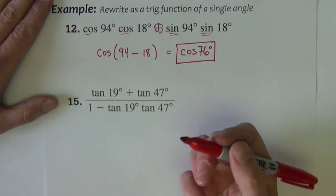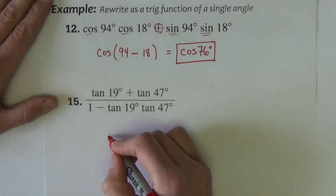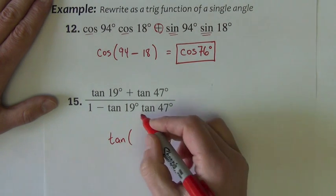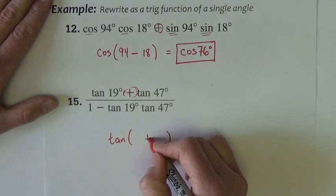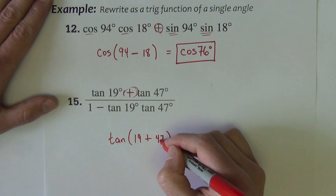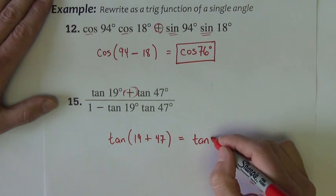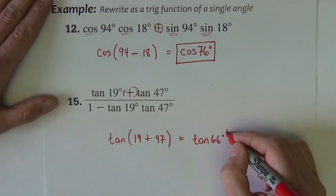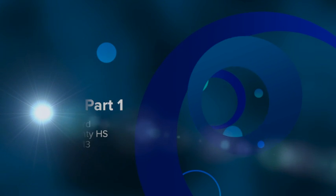This second example, it's no secret which one this one is. There's only one that even remotely looks like this with all the tangents in play. So it's a tangent expansion. Plus on top, minus on bottom. The sign on top is the one that we use to connect the angles from the tangent expansion. So we want 19 plus 47. This is tangent. We're going to add 19 and 47 together. Tangent of 66 degrees.